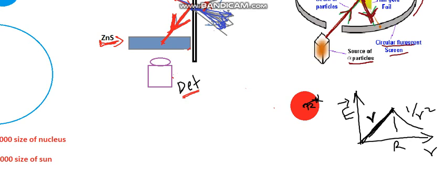If you know the electric field, you can calculate how much force it can exert on the alpha particle. If the electric field is E at the surface, then the force F equals q times E, where q is the charge of the alpha particle and E is the electric field produced by the spherical charge distribution. However, when he calculated this, the electric field produced by a charge distribution of atomic size was not enough to deflect or scatter the alpha particle, since alpha particles are massive compared to particles like protons and neutrons.